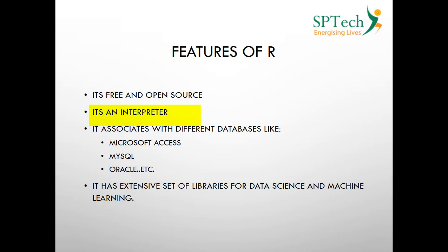R is an interpreter, which makes coding much easier. An interpreter is a translator that converts your high-level language into machine-level language. One other major feature of R is that it associates with different databases like Microsoft Access, MySQL, Oracle, and so on.